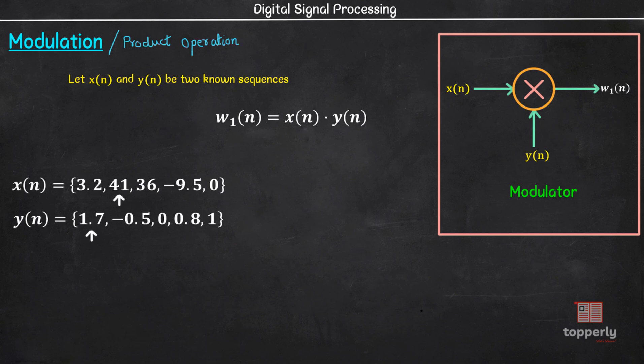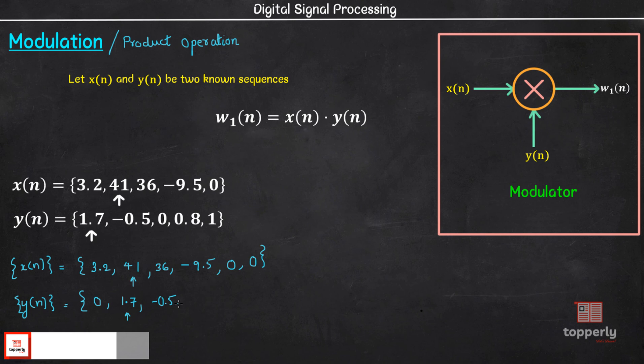Now let's see an example. We have two sequences x and y. Let's try to find the modulated output w1. Here in this example, although the sequences are of same length, the sample x in both the sequences do not coincide. So let's write the sequences accordingly. We have x of n equal to 3.2, 41, 36, -9.5, 0. Similarly we have y of n equal to 0, 1.7, -0.5, 0, 0.8, 1.